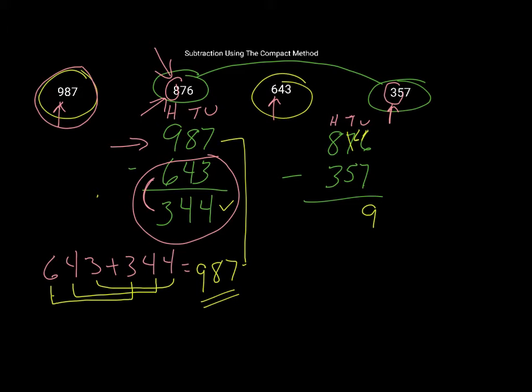And 60 subtract 50 is 10. 800 subtract 300 is 500.